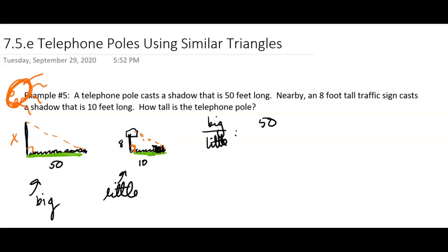compared to the distance of the shadow in the other one. So 50 is to 10, and that has to equal, and now we're going to compare the height in the big one, so X is to the height of that sign, which was 8 feet.